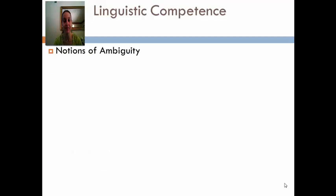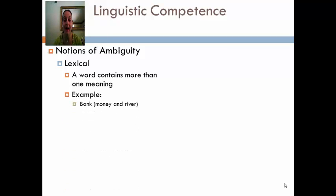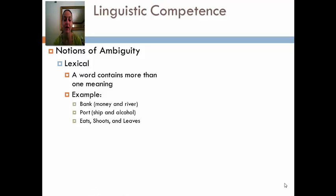There are two types of ambiguity. The first is lexical ambiguity, which means that a word contains more than one meaning. For example, 'bank' is lexically ambiguous because it can mean the money bank or the river bank. Same thing with 'port' — it could mean a ship port or an alcohol. And then 'Eats, Shoots and Leaves' was actually the title of a very well-known linguistics book. On the front cover it had a panda eating bamboo shoots and leaves, but if you were to just read the title, you would think that eating, shooting, and leaving are all verbs.